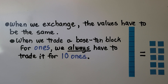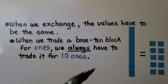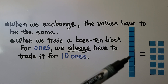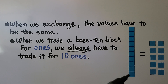When we exchange or trade, the values have to be the same. When we trade a base 10 block for ones, we always have to trade it for 10 ones. If we count each of these squares, we'll count 10 little squares. That's a strip of 10 and it's equal to 10 ones.